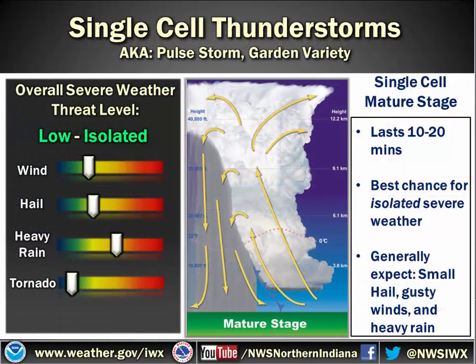The first is the single cell thunderstorm — again, just your pulse storm, your garden variety thunderstorm. Generally the threat of severe weather is pretty isolated or low. With the wind, you're going to see some gusty winds, some small hail, and maybe some heavy rain. Those are probably your biggest threats in that mature stage of a general thunderstorm, generally about 10 to 20 minutes or so. Tornado threat with these is very low to none. Most of the time you see wind and hail that's very small, not really anything significant.